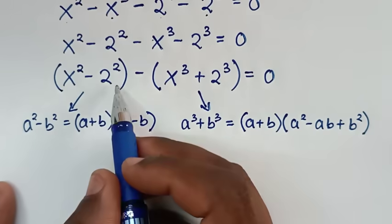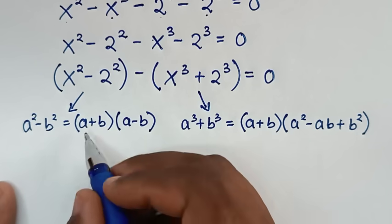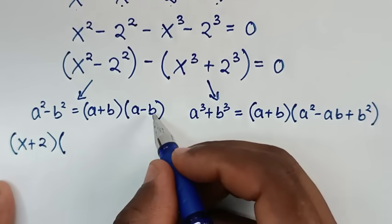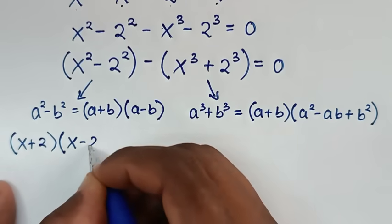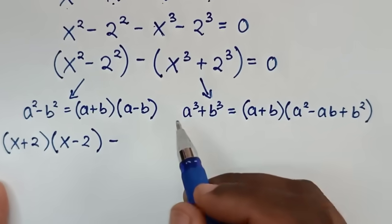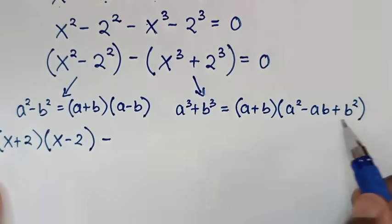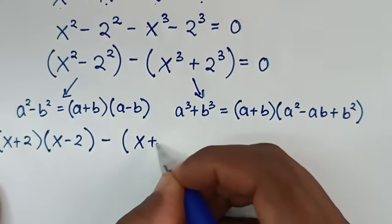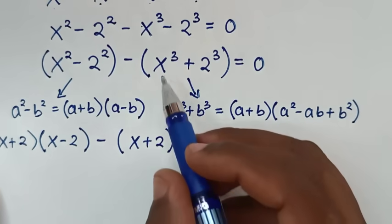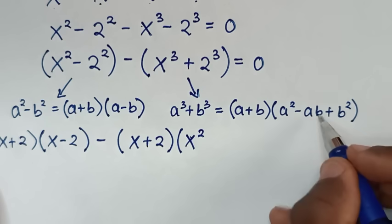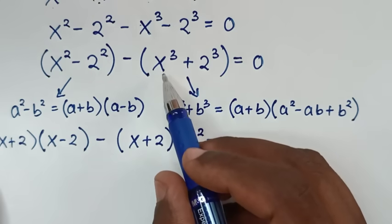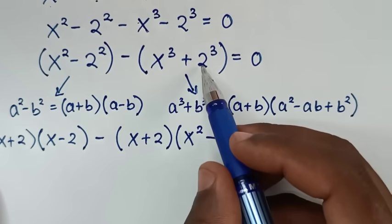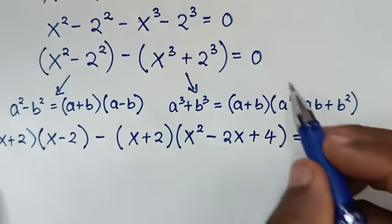Applying the difference of squares, a plus b is x plus 2 and a minus b is x minus 2. For the sum of cubes part, a plus b is x plus 2, a squared is x squared, minus ab is minus 2x, and b squared is 2 squared which is 4. So the bracket gives x squared minus 2x plus 4, all equal to 0.